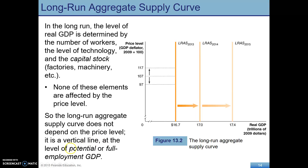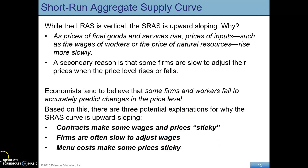This vertical line is drawn at the level of potential or full employment GDP. Long-run aggregate supply shifts over time because of increases in technology, the number of workers, or the capital stock — any of those things cause it to shift to the right over time. In the short run, though, the price level does tend to have an effect on the quantity of goods and services supplied.